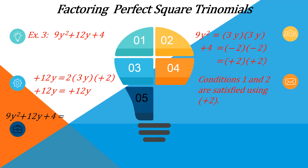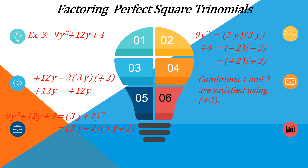We can now factor 9y² + 12y + 4, which equals (3y + 2)² or (3y + 2) multiplied by (3y + 2). In this example, we follow the pattern a² + 2ab + b² = (a + b)², or simply (a + b) multiplied by (a + b).